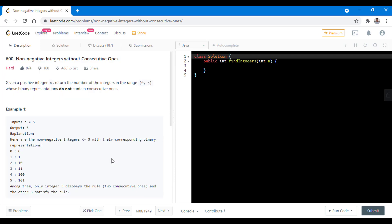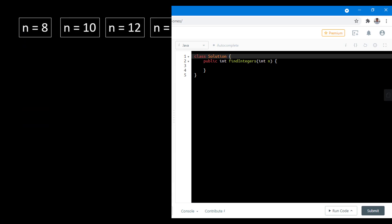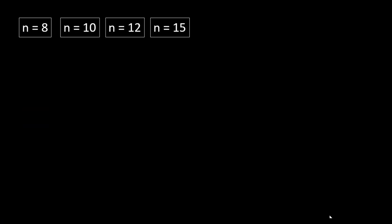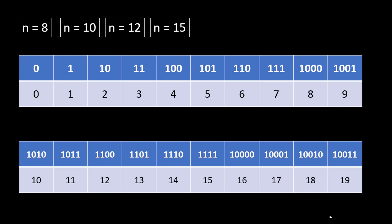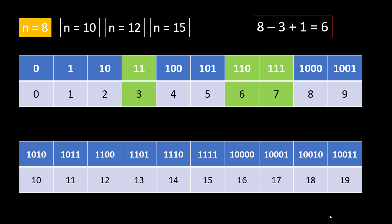Let's first understand the problem and how we can solve it. Suppose we have queries n = 8, 10, 12, and 15. If we look at all binary representations from 0 to 19, for n = 8 there are three numbers between 0 and 8 whose binary representation contains consecutive ones. So we do not count those and return 8 minus 3 plus 1, which equals 6.